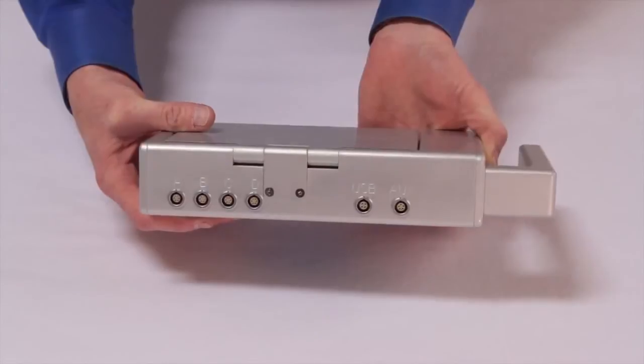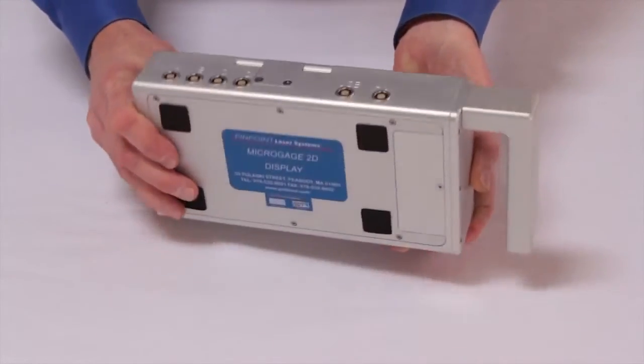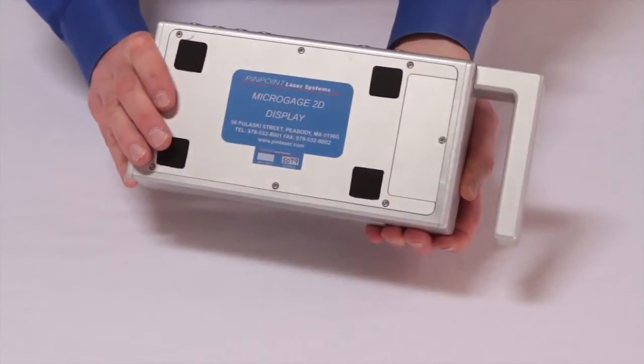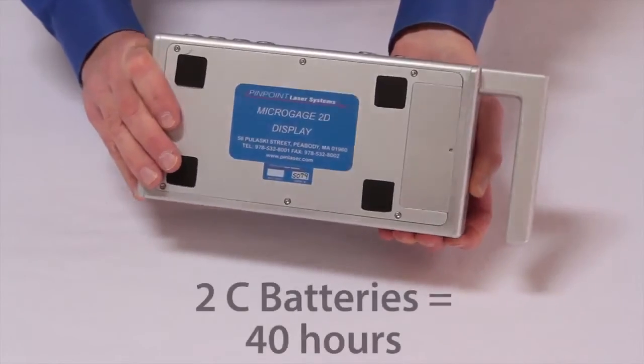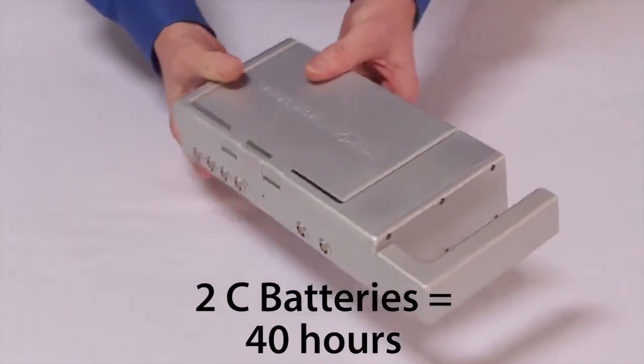Beneath the display housing, there is a sealed battery compartment to accommodate 2 C batteries. The micro gauge display will operate for approximately 40 hours on a set of batteries.